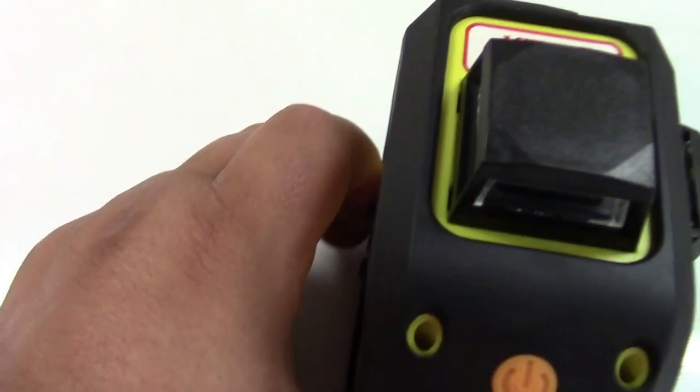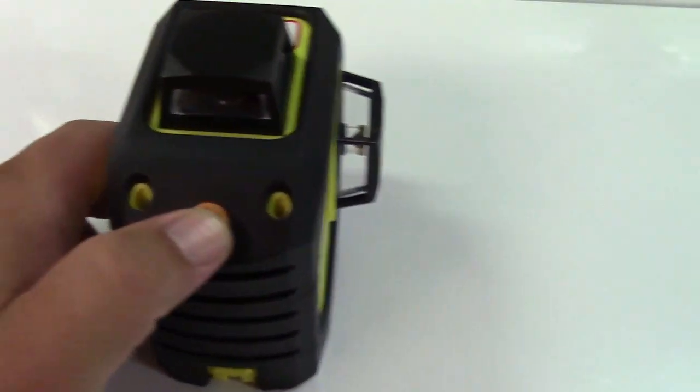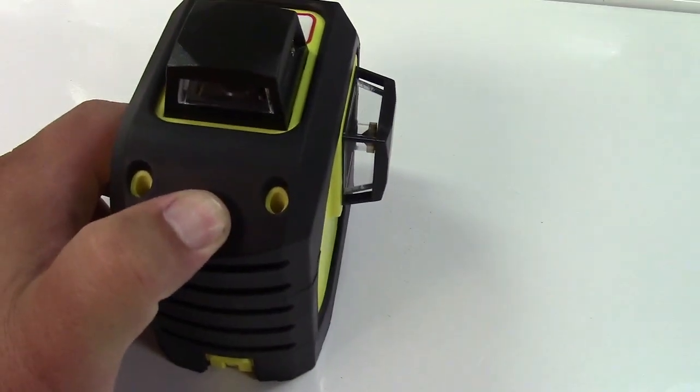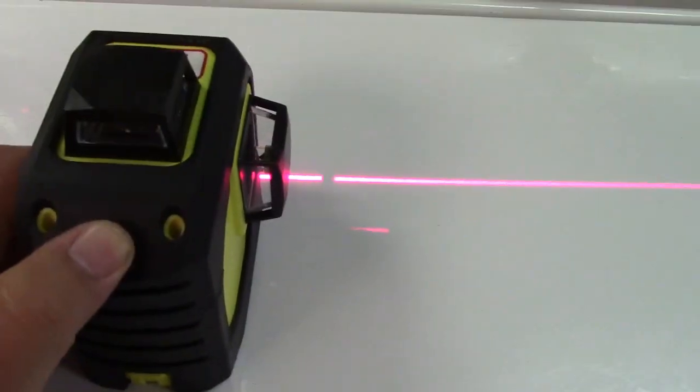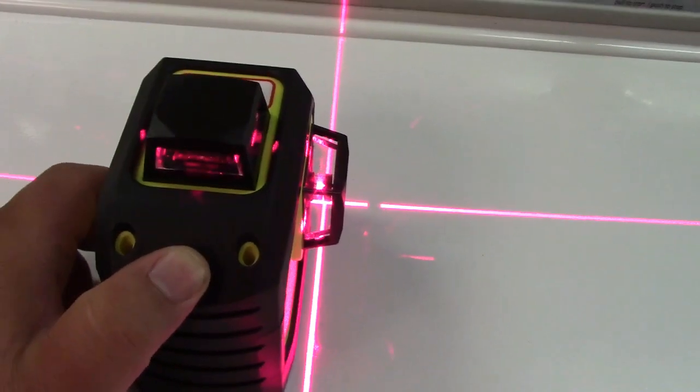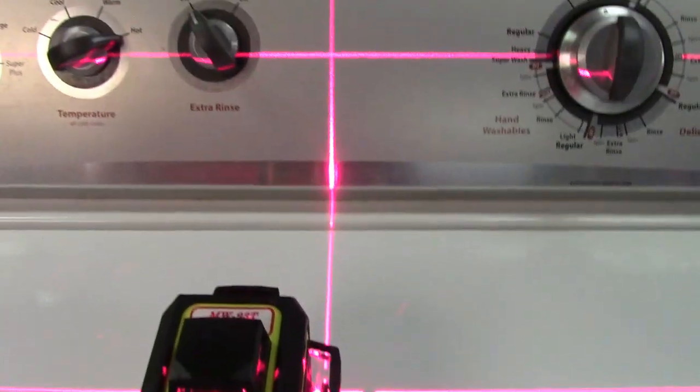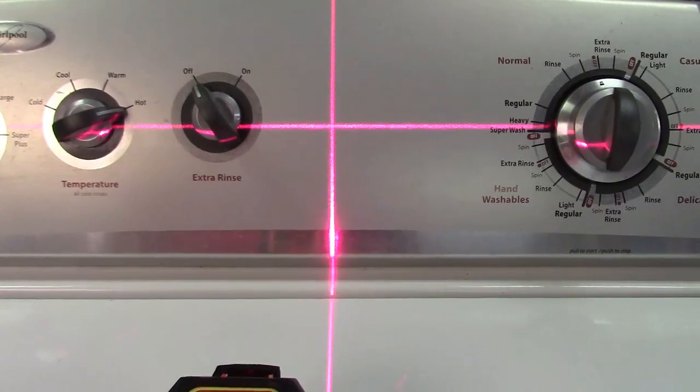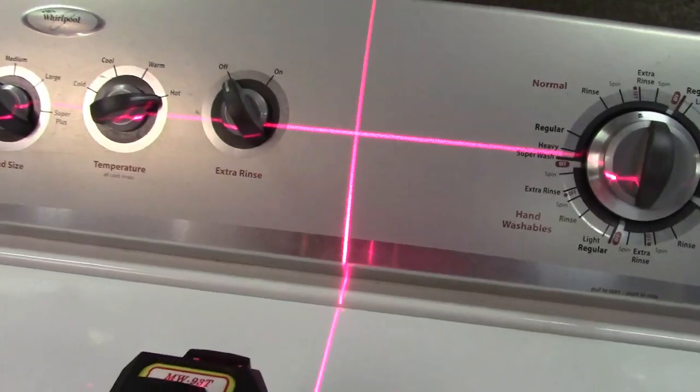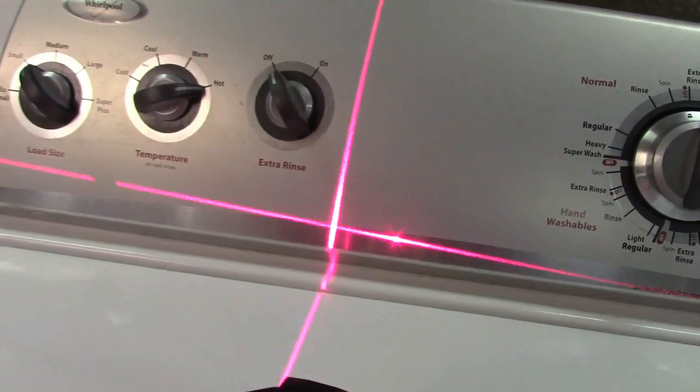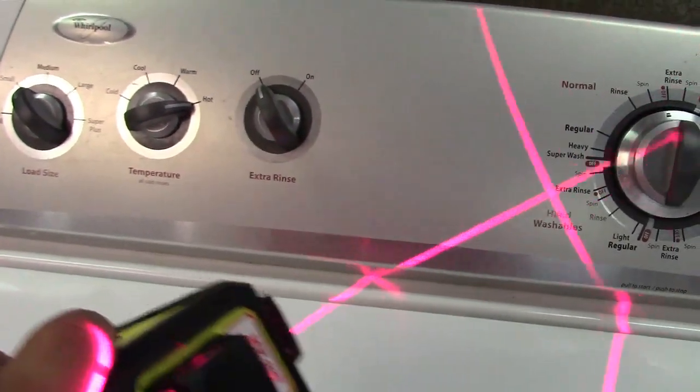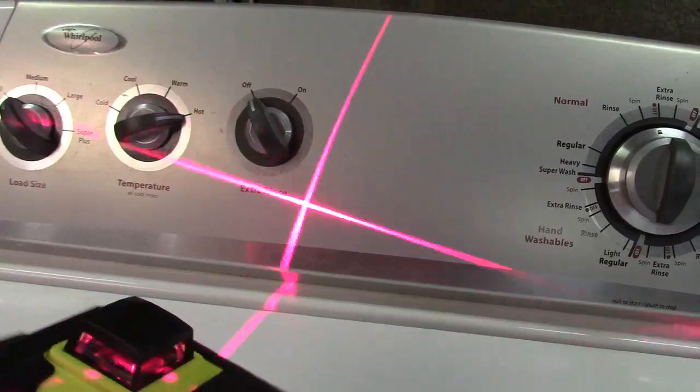We can shut off the self-leveling feature and turn it on just with the button here. And then we can turn on all of the different lasers in the same fashion. It will flash every now and again, but now it's in slope mode. So you can have it any which way you'd like, to get any kind of angle or anything like that.